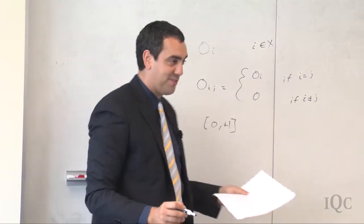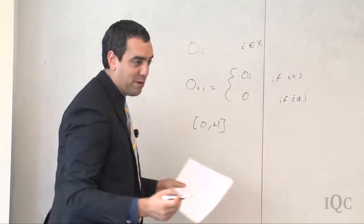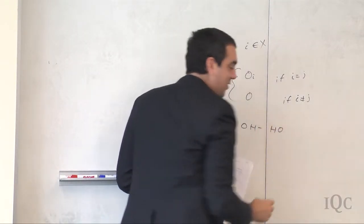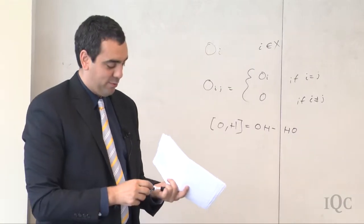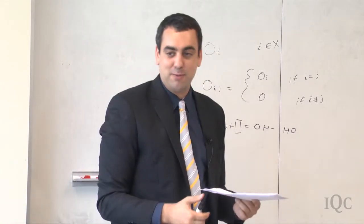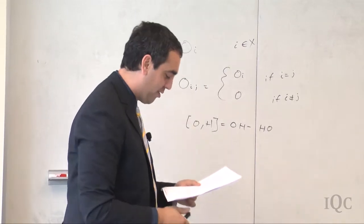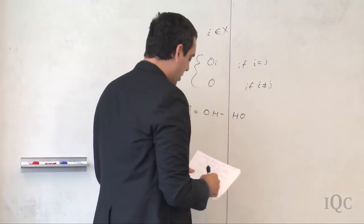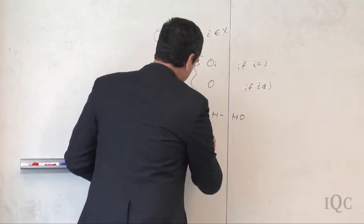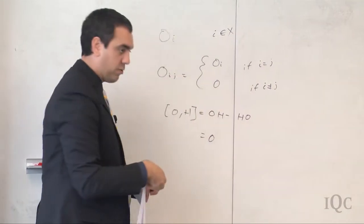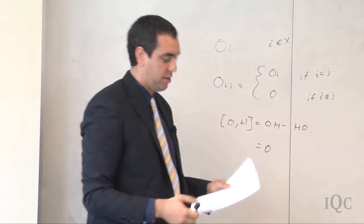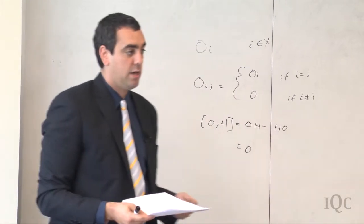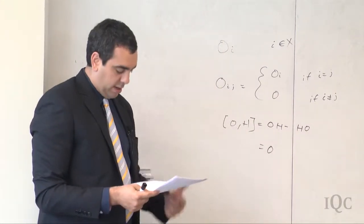We don't yet know what the stochastic version is. Brendan Fong, working with John Baez during his visit to CQT, actually proved a lot of this. A stochastic state is a probability distribution on X. The expected value of an observable O in state ψ is defined as Σ_{i∈X} O_i ψ_i.